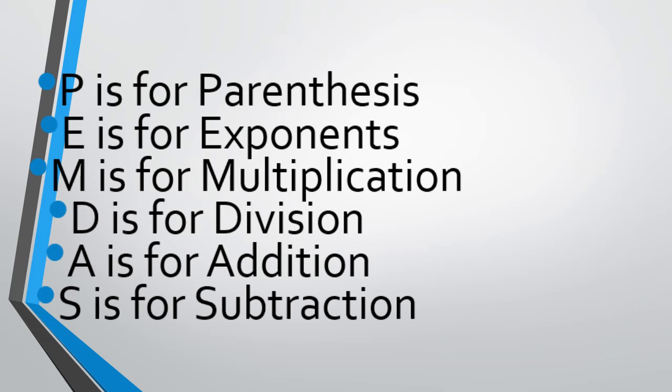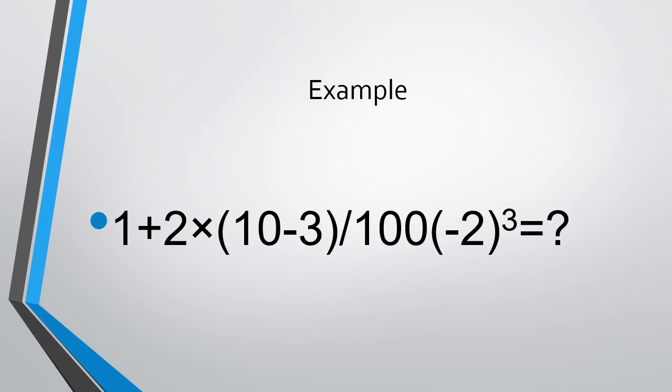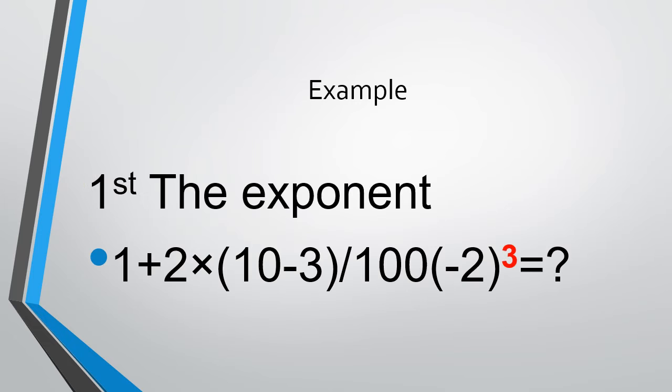Here's an example problem. We got 1 plus 2 times 10 minus 3 divided by 100 times minus 2 to the third. Using order of operations, the first thing to solve is the exponent.